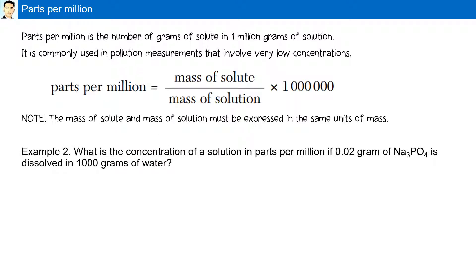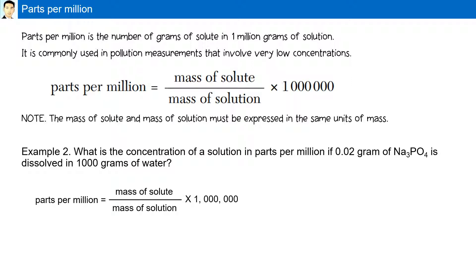For example, what is the concentration in parts per million if 0.02 grams of Na3PO4 is dissolved in 1,000 grams of water? Using the formula parts per million equals mass of solute divided by mass of solution multiplied by one million, we plug in: 0.02 divided by 1,000.02, multiplied by one million, which results in 20 parts per million. For every million particles, 20 of them are Na3PO4, so the answer is 20 ppm.